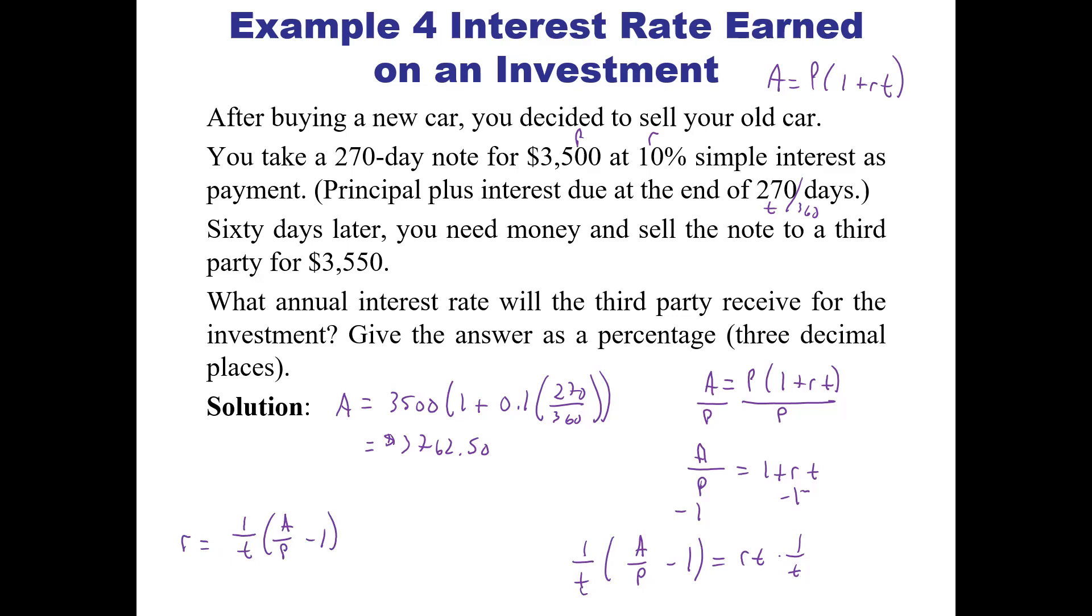All right. So what do we know and what do we have to put in here? Well, we have our A, our future value is at 3762.50. So the P now is something different because now our P is going to be this new P, the 3550. And so then we have a new time too, because it's normally 270. We're doing it 60 days later. So what's our time now? Well, our time is going to be 270 minus 60 or 210. And again, that's still out of 360.